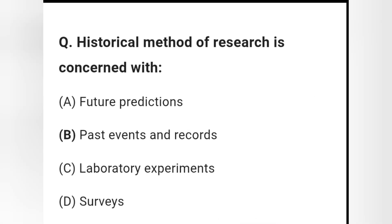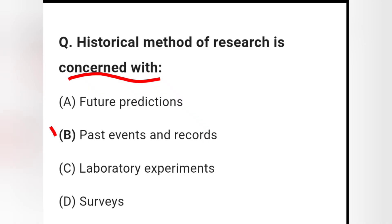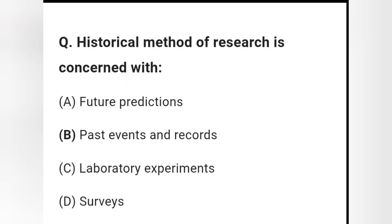Question 4: Historical method of research is concerned with — future predictions, past events and records, laboratory experiments, or surveys? Option B — past events and records — is the right answer.